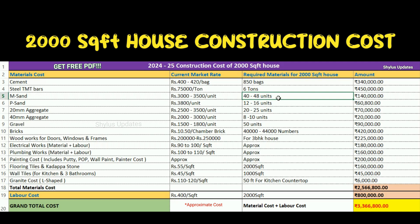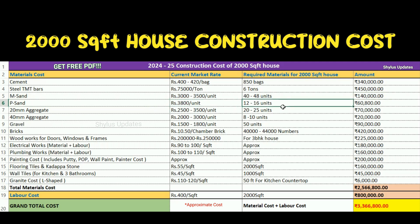M Sand: ₹3,000 to ₹3,500 per unit. For a 2,000 square feet house, 40 to 48 units of M sand are required. The total amount for M sand is ₹1,40,000. P Sand: ₹3,800 per unit. For a 2,000 square feet house, 12 to 16 units of P sand are required. The total amount for P sand is ₹60,800.